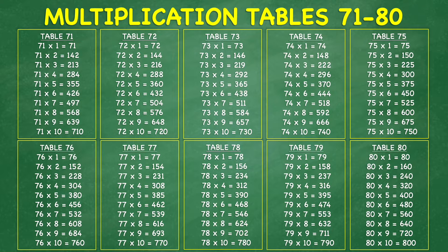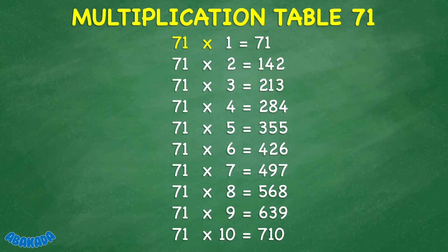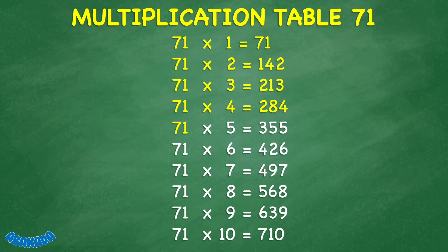Multiplication Table 71 to 80. 71 times 1 equals 71. 71 times 2 equals 142. 71 times 3 equals 213. 71 times 4 equals 284. 71 times 5 equals 355. 71 times 6 equals 426. 71 times 7 equals 497.